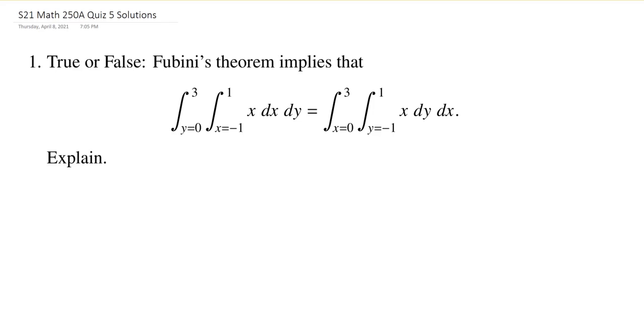This first question is a true or false question asking us whether or not we're allowed to, in essence, commute these integral signs. We've set up a double integral and the difference you can see is that I have dx, dy in the first one, and dy, dx. And that should correspond to me swapping the x's and the y's. You can see that the y is in the first position on the left and then it's in the second position on the right.